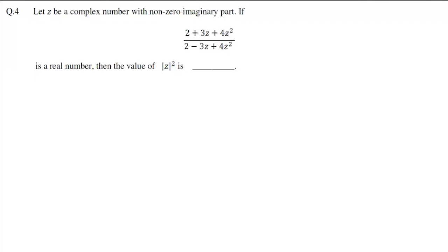In this question we are given a complex number with non-zero imaginary part, and it says if it is a real number, find the value of mod of z squared. We know that any complex number w will be purely real if w equals w bar.